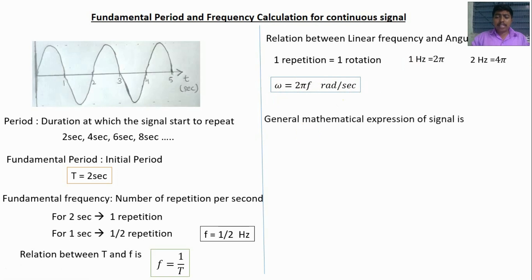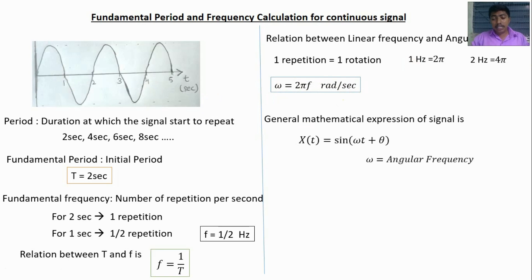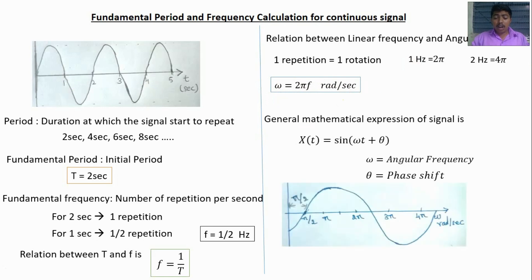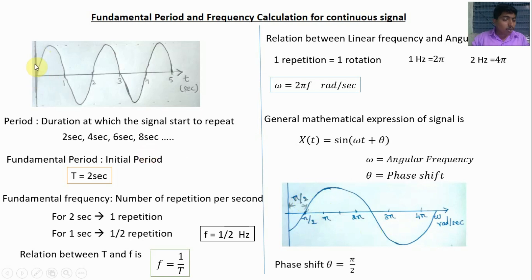The general mathematical expression of the signal is x(t) = sin(ωt + θ), where omega (ω) means angular frequency and theta (θ) means phase shift. Phase shift means how the signal is delayed. By observing the signal, if the signal starts at a π/2 angle, the phase shift is π/2. But if the signal starts at 0, the phase shift for the signal is 0.